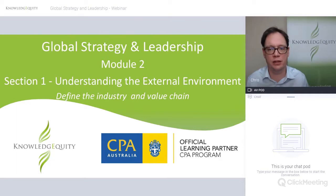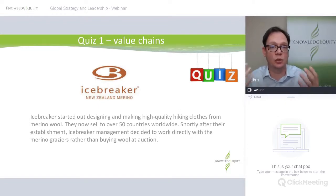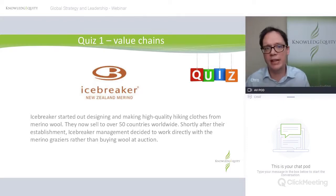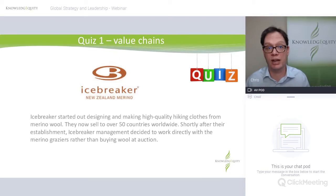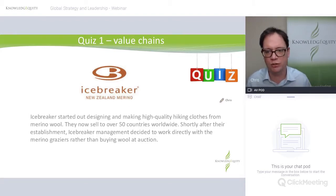We're talking about an industry value chain here, not an organisational one. Icebreaker — one of my favourite brands in terms of outdoor clothing and hiking gear. Icebreaker started out designing and making high-quality hiking clothes from merino wool, selling to over 50 countries worldwide. Shortly after they started, they made a strategic decision to work more directly with graziers — the people that breed and raise merino sheep — rather than going to basically an auction house where everybody bids and buys it.